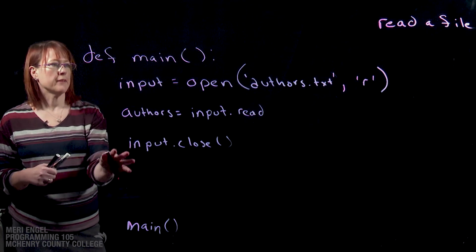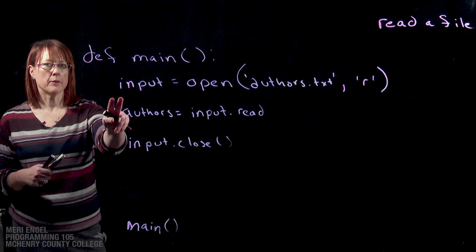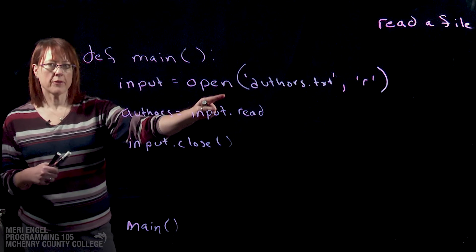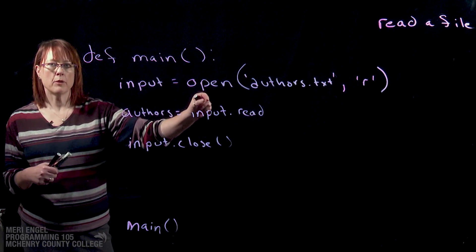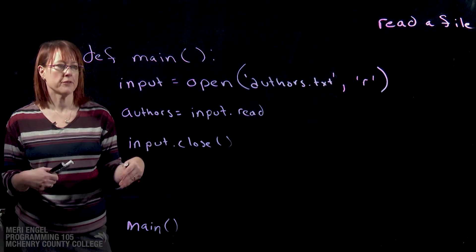Looking at this very simple sample program, we're going to declare input as an object. It's a variable that's opening authors.txt in read mode. So we're not making any changes to the file, we're not adding anything to it, we're just reading it.